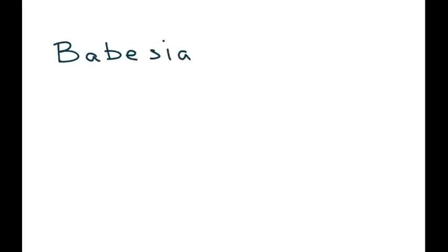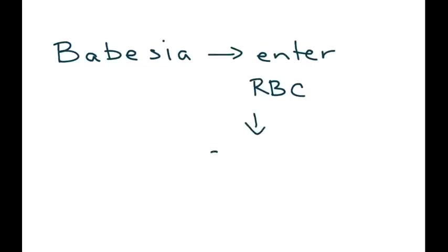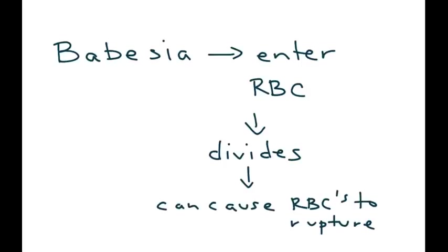The Babesia protozoa enters the red blood cell of a human, and that's where it divides. This can cause the red blood cells to rupture, and that can lead to anemia.